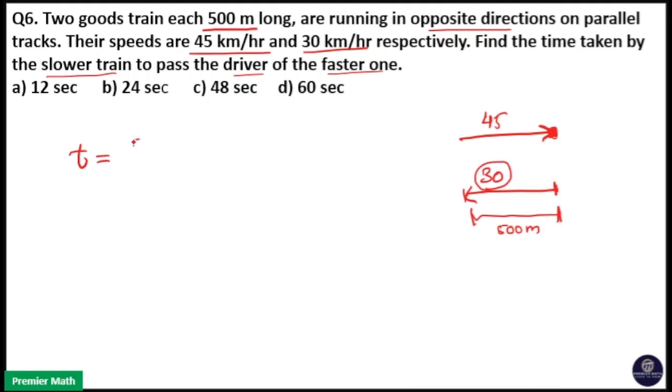is equal to the length of the slower train divided by speed. The speed is the relative speed. When both are moving in opposite directions, add the speeds: that is 45 plus 30 equals 75. So this is in kilometers per hour.